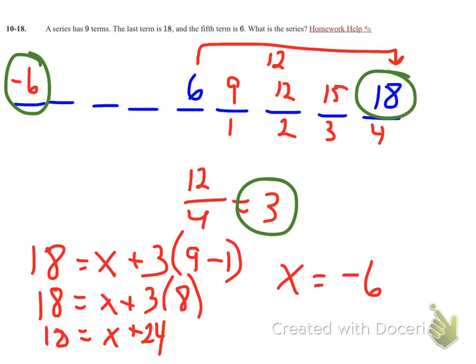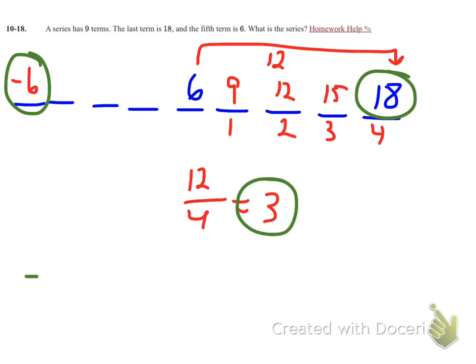So to write out that series, I'm going to write it as negative 6 plus negative 3 plus 0. I've now established the pattern, plus dot, dot, dot, plus 18.